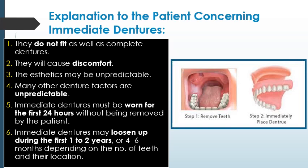You need to explain to the patient the following concerning the immediate denture: it does not fit as well as a conventional complete denture because it is placed immediately; it will cause discomfort; the aesthetics may be unpredictable; many other denture factors are unpredictable, such as the position of the teeth, the leveling of the occlusal plane, and speech. The immediate denture must be worn for the first 24 hours without being removed by the patient. It may loosen up during the first one to two years or four to six months depending on the number of teeth extracted and their location.